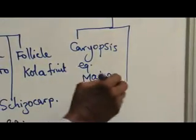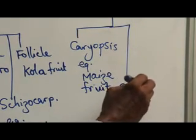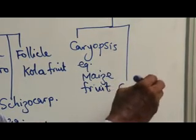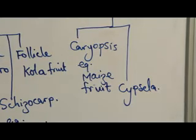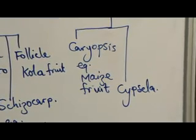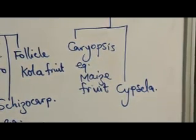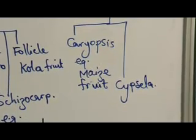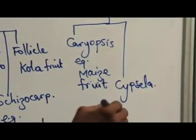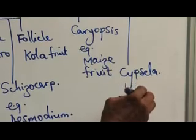Then we have cypsela. This is a one-seeded fruit that retains the calyx, forming a pappus.